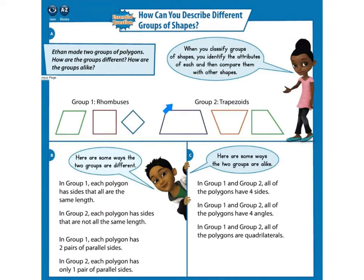These are trapezoids. They each have only one set of parallel lines. Here are some ways the two groups are different. In Group 1, each polygon has sides that are all the same length. In Group 2, each polygon has sides that are not all the same length. In Group 1, each polygon has two pairs of parallel lines. In Group 2, each polygon has only one set of parallel lines.